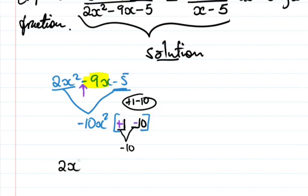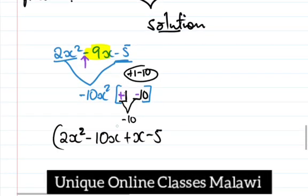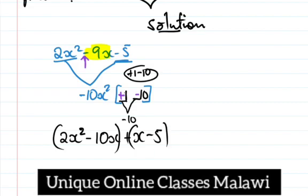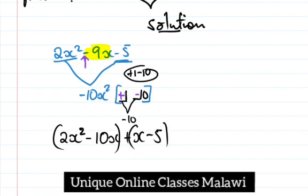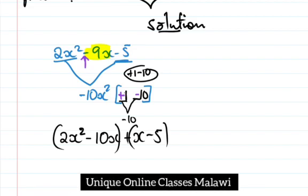So instead of writing -9x we use our factors, giving us 2x squared minus 10x plus x minus 5. Next we pair the terms and factor out the common factor in each pair of terms.